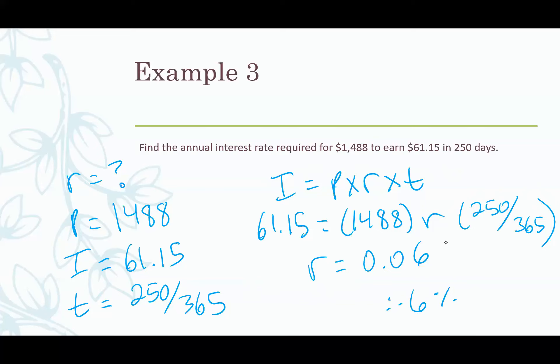We plug what we know into our formula. So we know I, we know P, we don't know r, we know t. Then we just rearrange to get r on its own. So we would divide both sides by 1488 and by 250/365. So we get r equals 0.06, but remember rates are always expressed as a percent. So this is actually 6%.